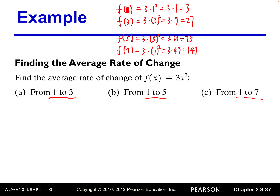Now that we have those function evaluations, we can plug into the average rate of change formula. From 1 to 3, the numerator is f(3) minus f(1) — the difference of two y's — and the denominator is 3 minus 1. That gives us 27 minus 3 over 3 minus 1, which is 24 over 2 = 12. The average rate of change from 1 to 3 is 12.